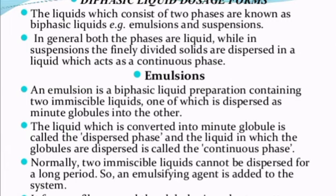Normally, two immiscible liquids cannot be dispersed for a long period, so an emulsifying agent is added to the system. The emulsifying agent forms a film around the globules in order to scatter them indefinitely in the continuous phase so that a stable emulsion is formed.